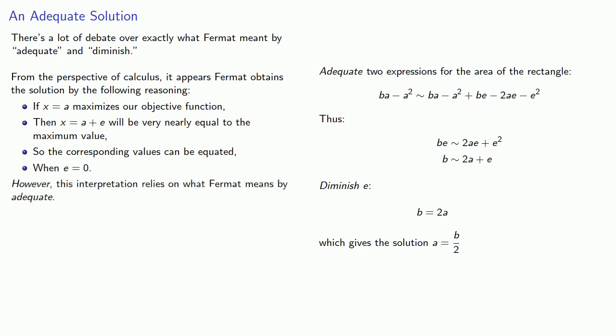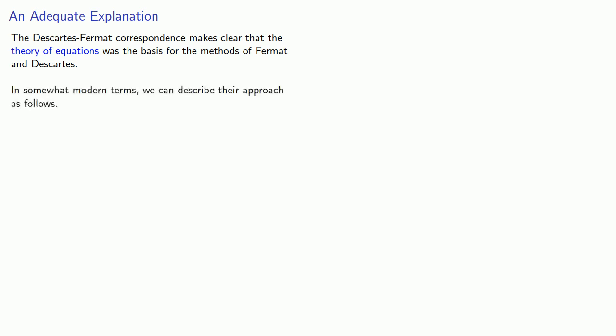However, this interpretation relies on what Fermat means by adequate. While he takes the term from Diophantus, it's unclear what Fermat really means by it. Now, this led to a series of letters back and forth among French mathematicians that it's convenient to refer to as the Descartes-Fermat correspondence. Although Descartes and Fermat only rarely wrote directly to each other. What's important is that the Descartes-Fermat correspondence makes clear that the theory of equations was the basis for the methods of both Fermat and Descartes.